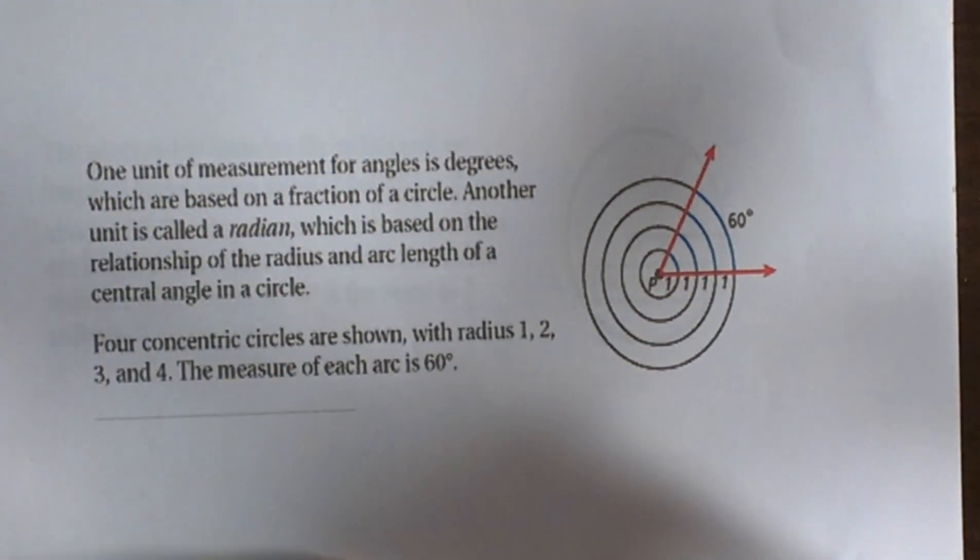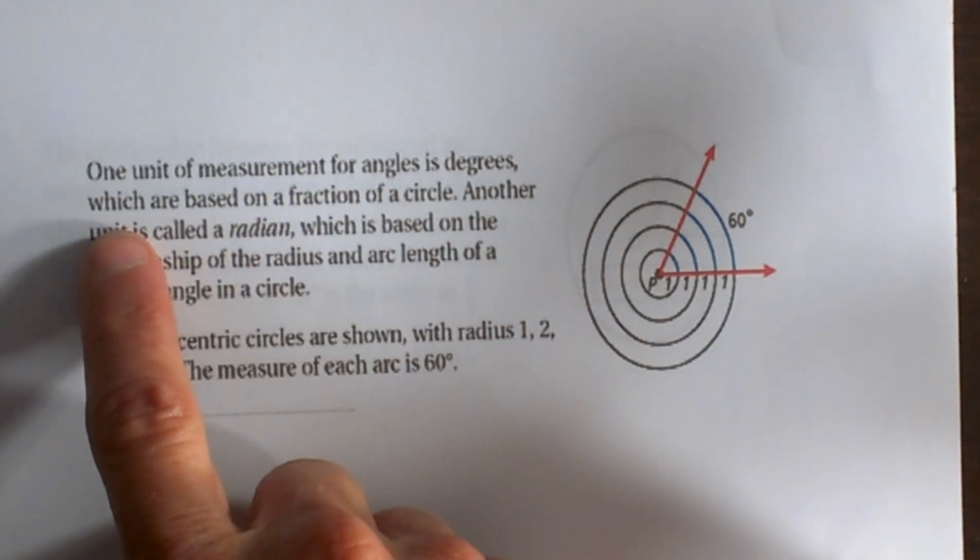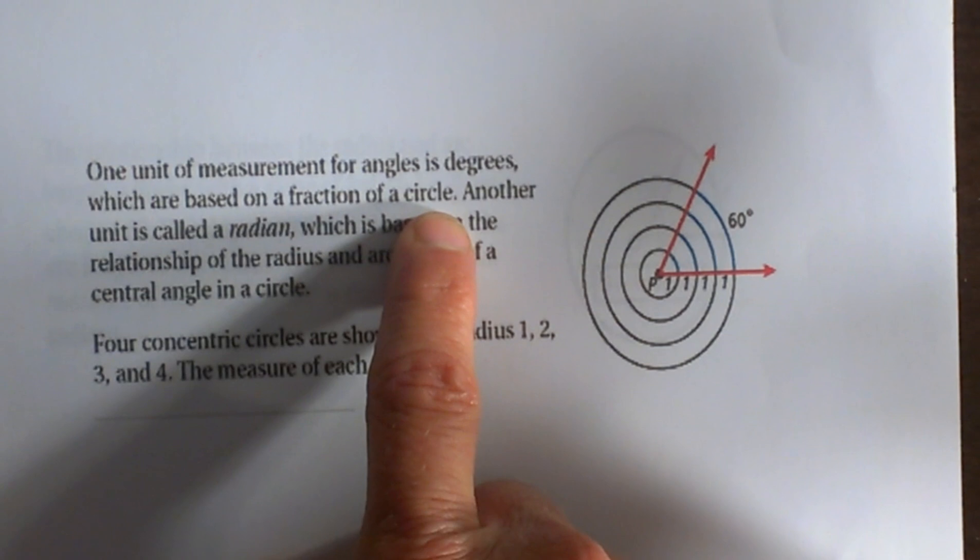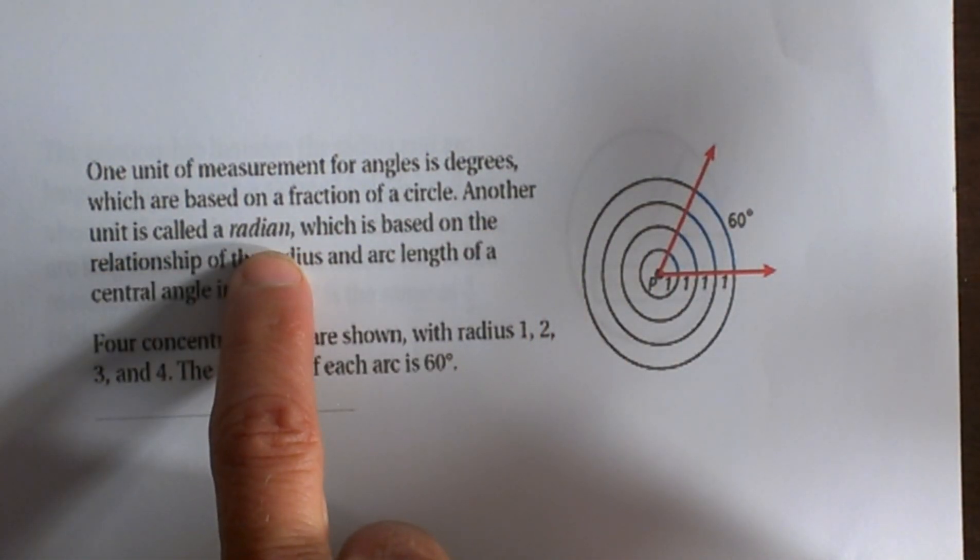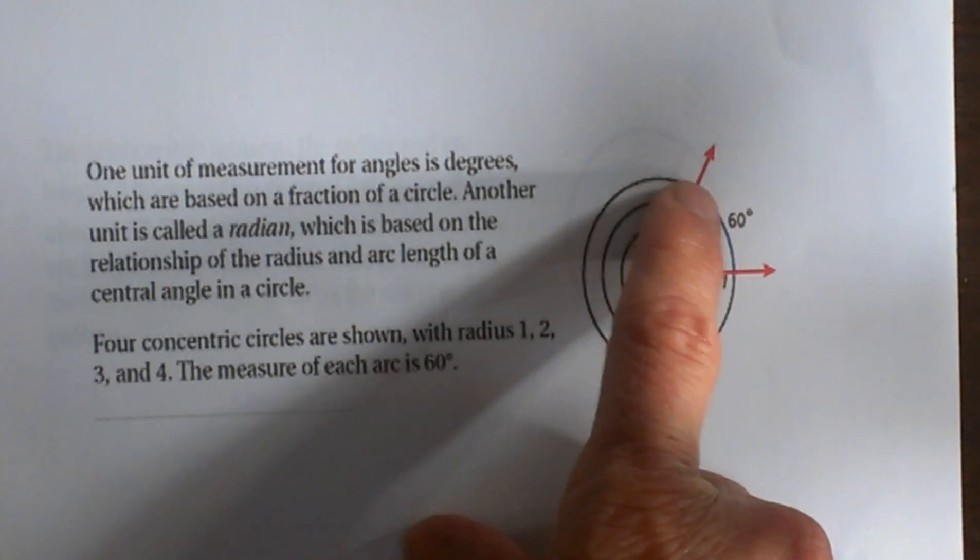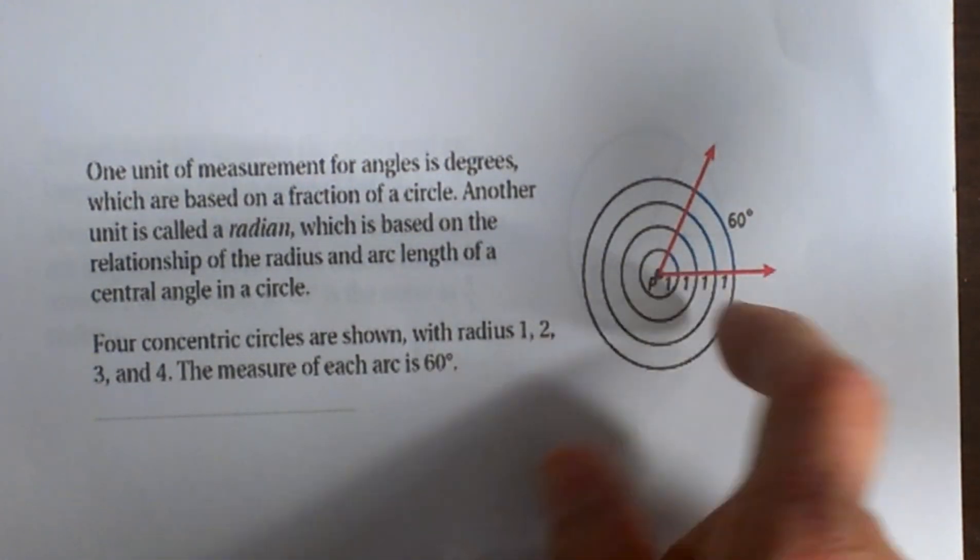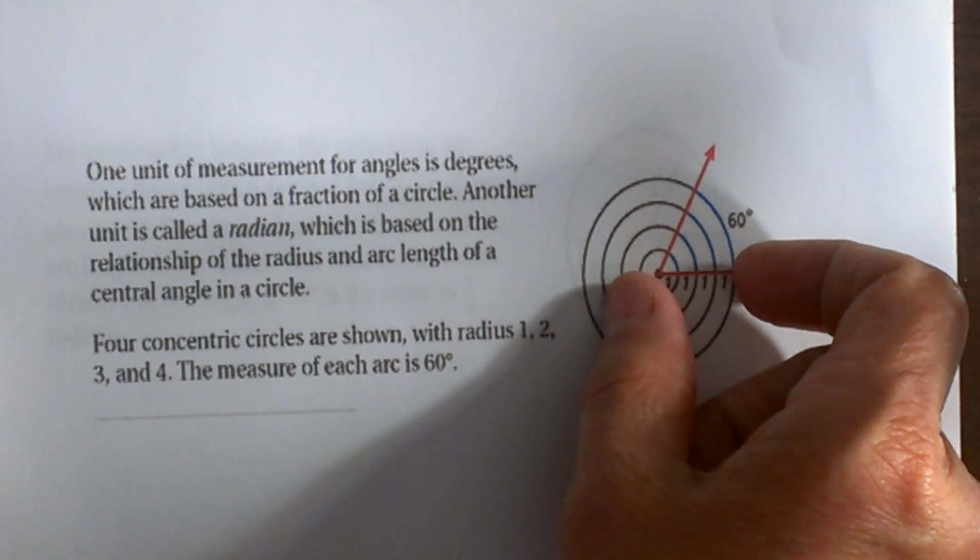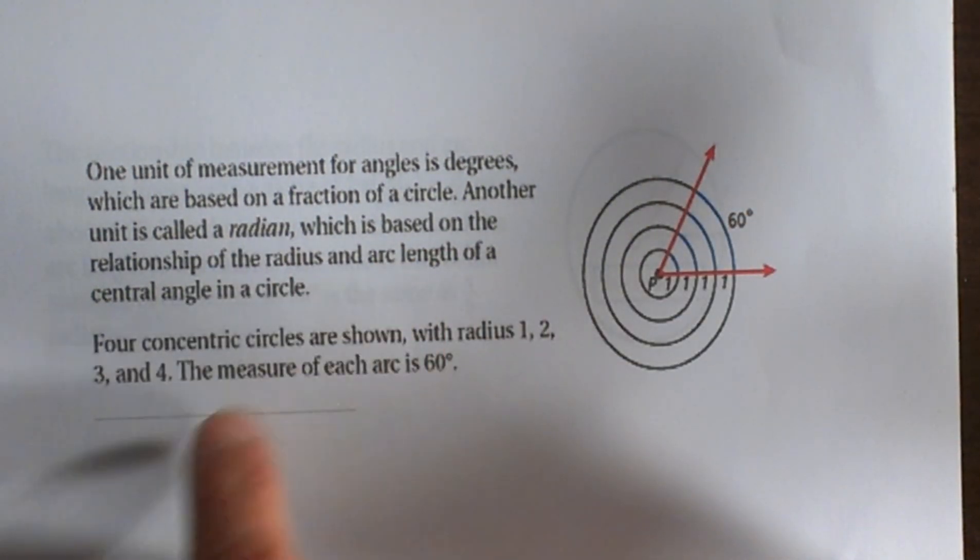One unit of measure for angles is degree, which is based on a fraction of the circle. We know there are 360 degrees in a circle. Another unit is called a radian, which is based on the relationship between the radius and the arc length. The arc length we're talking about is the one inside the angle. We're setting a ratio of the radius to the arc length. That's what a radian is.